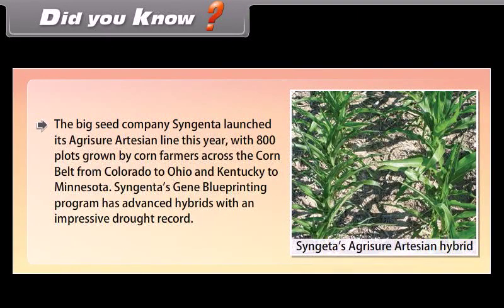Did you know? The big seed company Syngenta launched its Agrisure Artesian line with 800 plots grown by corn farmers across the Corn Belt from Colorado to Ohio and Kentucky to Minnesota. Syngenta's gene blueprinting program has advanced hybrids with an impressive drought record.